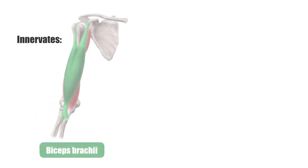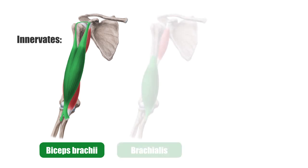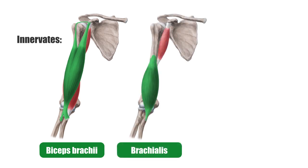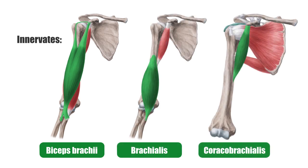It supplies the biceps brachii, the brachialis, and the coracobrachialis. The lateral cutaneous nerve, which supplies the skin on the lateral aspect of the forearm, arises from the musculocutaneous nerve.